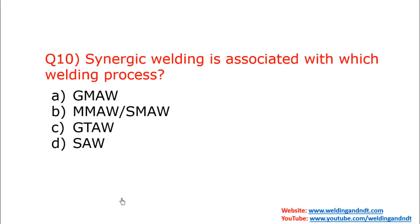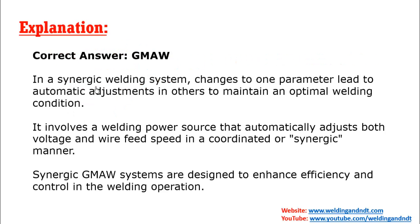Question number ten: synergic welding is associated with which welding process? The term 'synergic' refers to proper coordination. In synergic welding, if you vary any parameter, the other parameters are adjusted automatically — this is associated with GMAW. In MIG welding, if you vary the voltage, the wire feed speed is changed automatically by the power source. Synergic welding systems are designed to enhance efficiency and control of the welding operation.